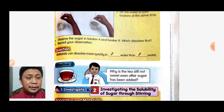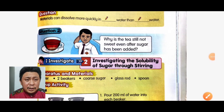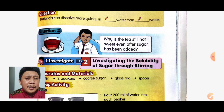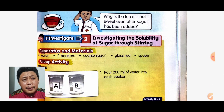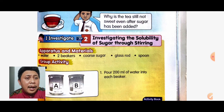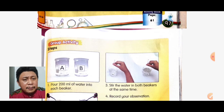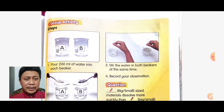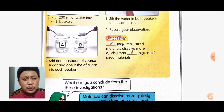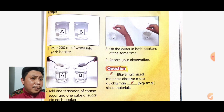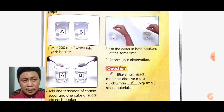Situation two: why is the tea still not sweet even after sugar has been added? We investigate the effect of stirring on solubility. Apparatus needed: water, two beakers, caster sugar, sugar cube, and spoon. Step one: pour 200 ml of water into each beaker. Step two: add one teaspoon of caster sugar into one beaker and one cube of sugar into the other. Step three: stir both beakers at the same time and record your observations.